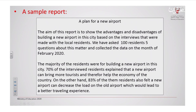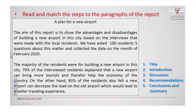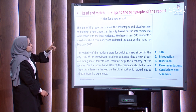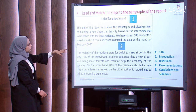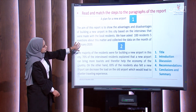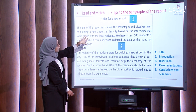This is a sample of a report. The title is 'A Plan for a New Airport — This is a Report.' Try to read it. Now we'll try to find out where the title, the introduction, the discussion, the recommendations, and the conclusions and summary are. The title is 'A Plan for a New Airport.' The introduction comes always at the beginning — it gives us a general idea of what's going to be discussed and the main aim of the report.